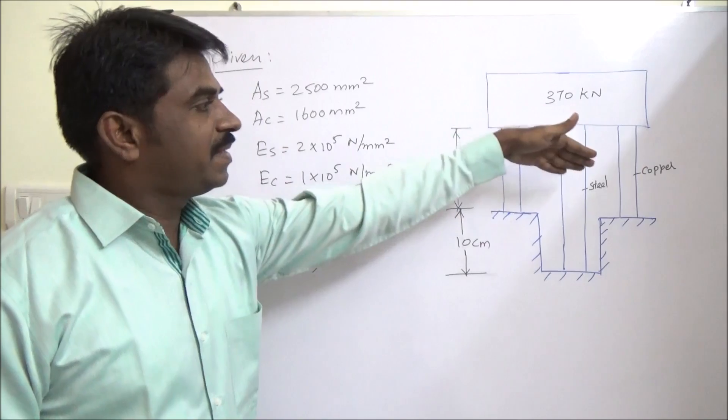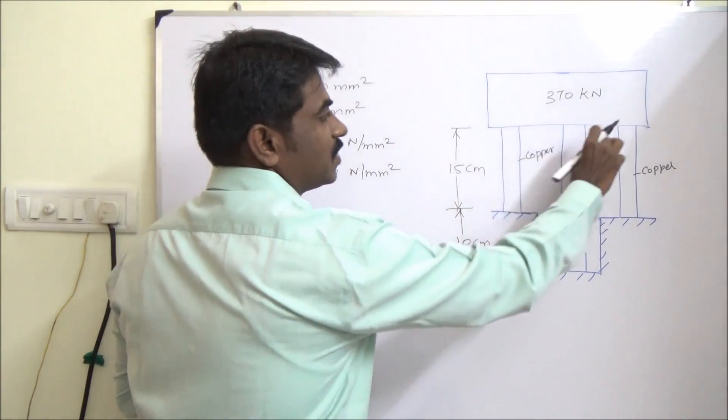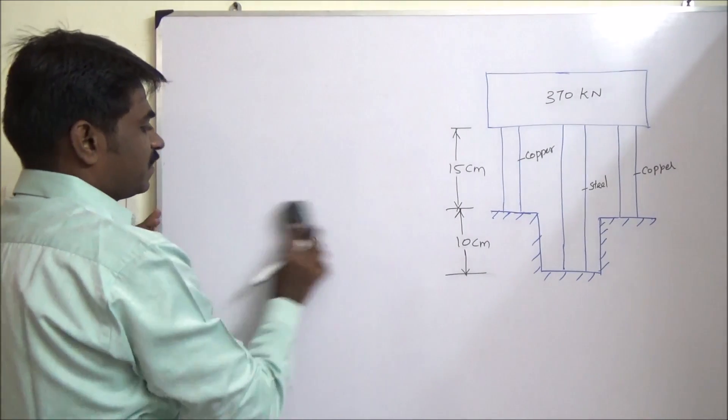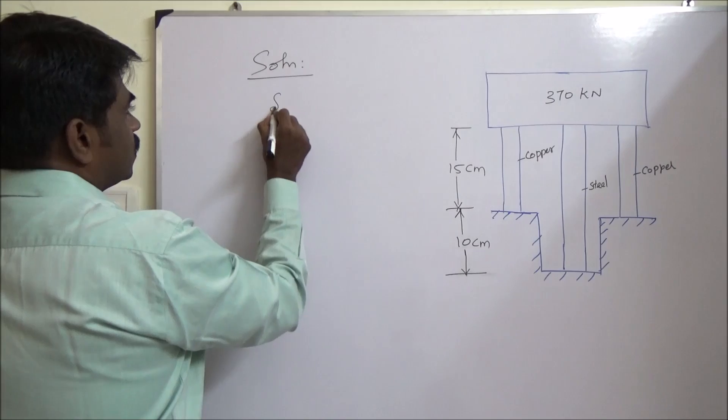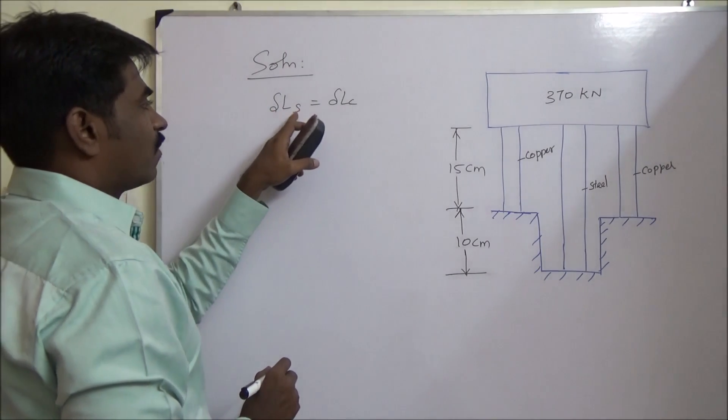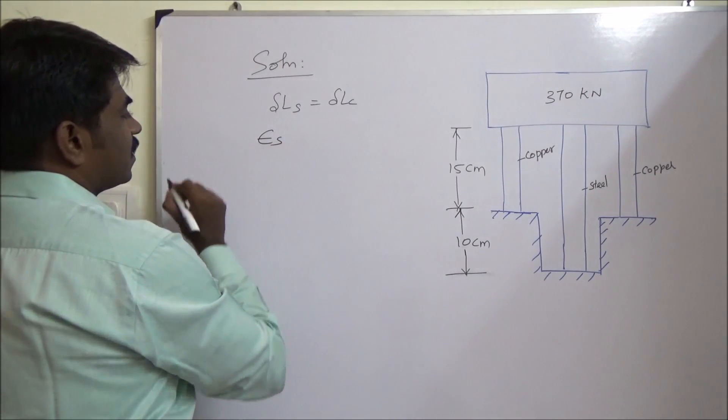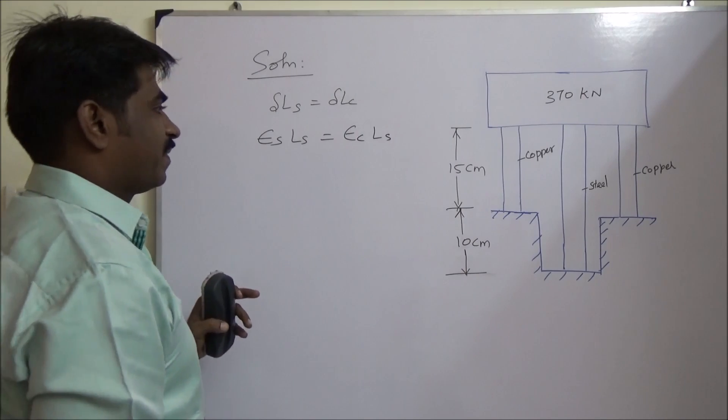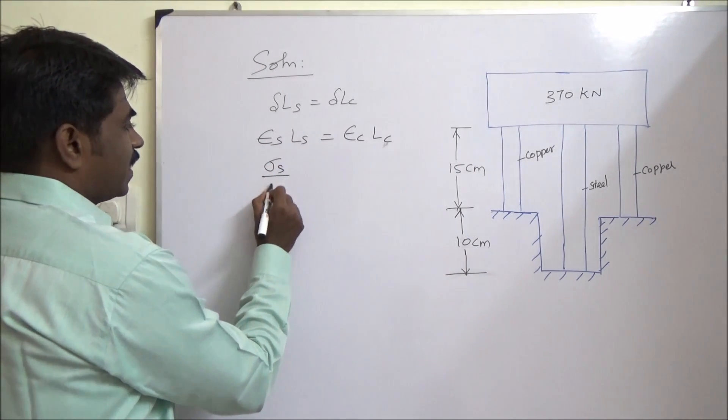Now when this load is supported by these rods, the decrease in length is going to be equal in all the rods. That is our first condition. Let us apply that first. So change in length of steel equal to change in length of copper. It could be written as strain in steel and strain in copper multiplied by the length. So strain is stress by Young's modulus.